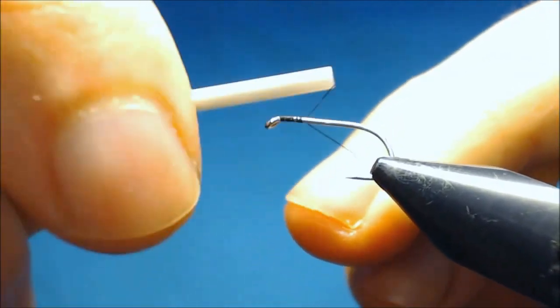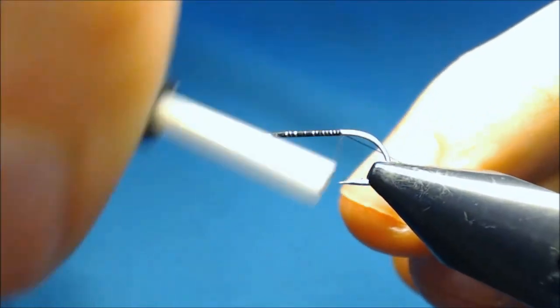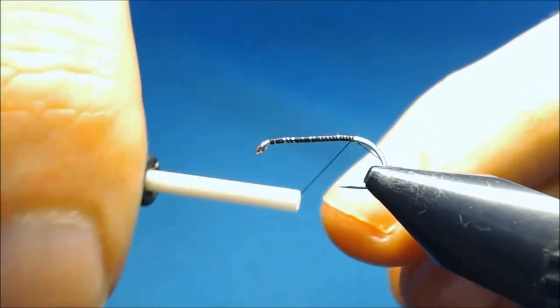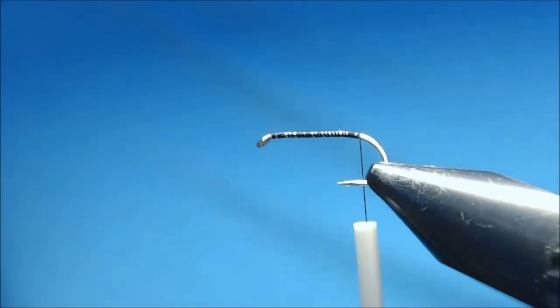So we'll start by putting down a layer of thread. And we'll take it to the barb of the hook, slightly longer.